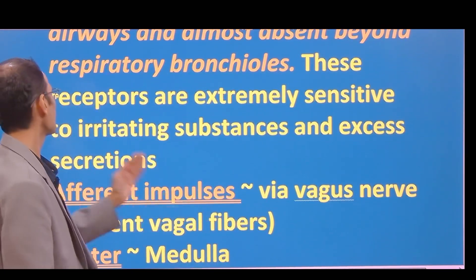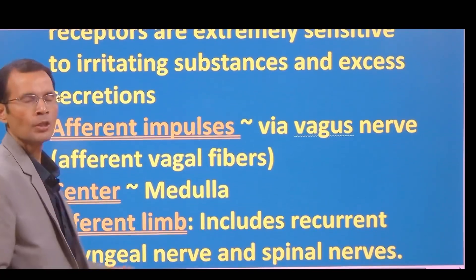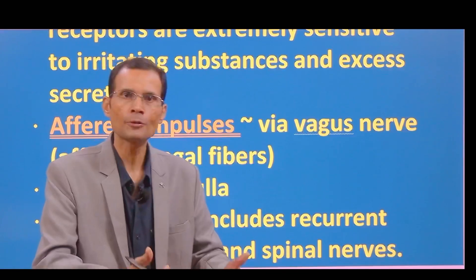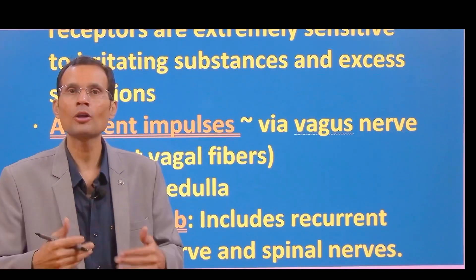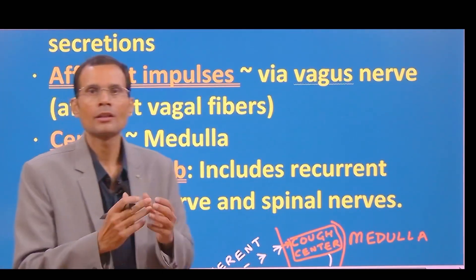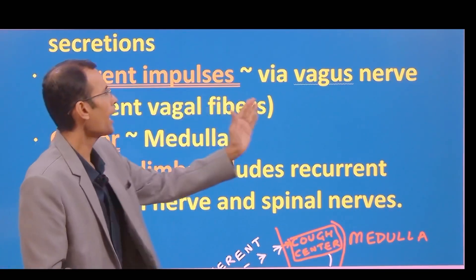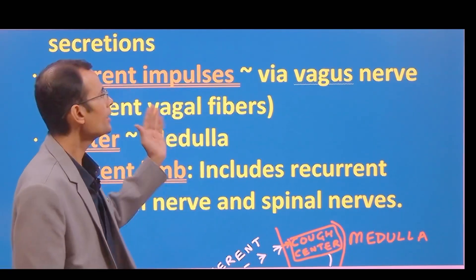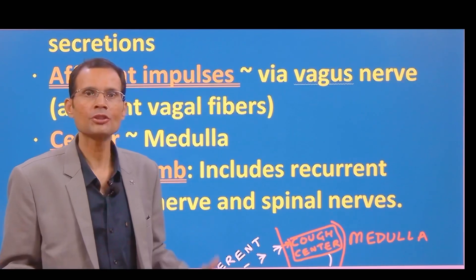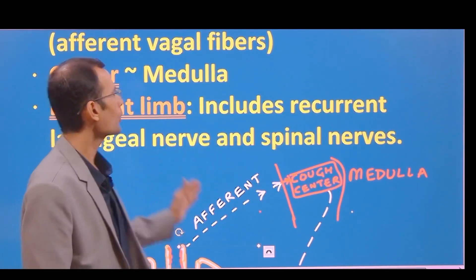These receptors are extremely sensitive to irritating substances and excess secretions. So the cough reflex achieves two purposes: foreign materials are thrown out and excessive secretions are not allowed to accumulate. Impulses generated by the receptors are carried via afferent vagal fibers — afferent fibers of the vagus nerve — which take the signals to the center.